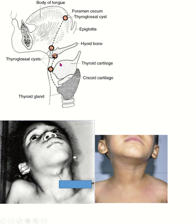Today I discuss what is the difference between thyroglossal cyst and branchial cyst. The thyroid gland develops from endoderm from the floor of the pharynx, in between the first and second pharyngeal arches. This is the tongue, with the anterior two-thirds and posterior two-thirds, and at the junction is the foramen cecum.